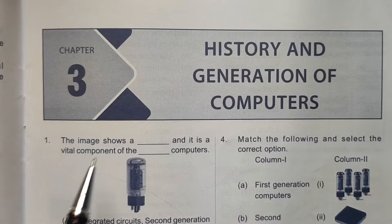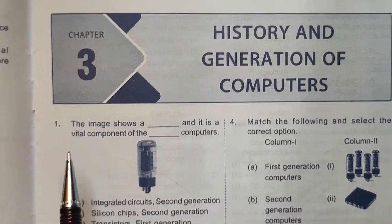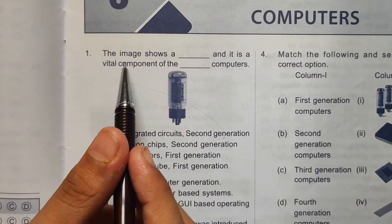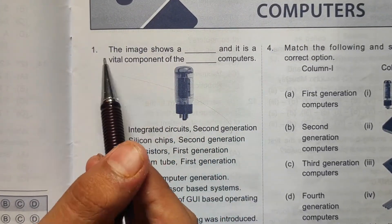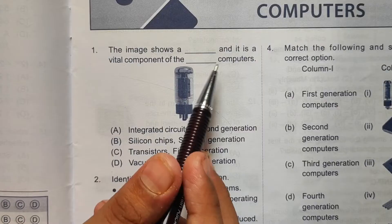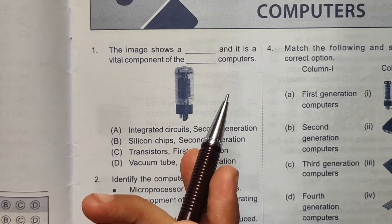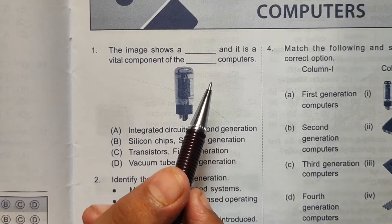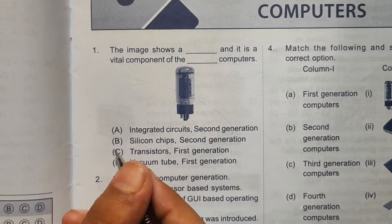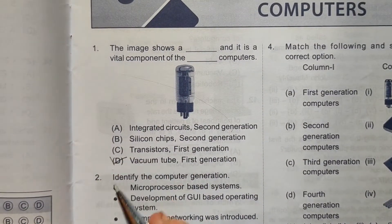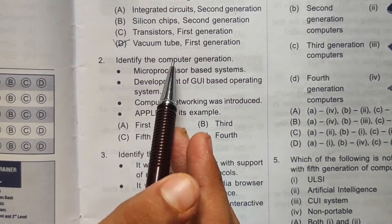Let's start Chapter 3: History and Generation of Computers. Question number one: the image shows a blank, and it is a vital component of the blank computers. This is a vacuum tube, and it was used in the first generation computers. The correct answer here will be option number D.